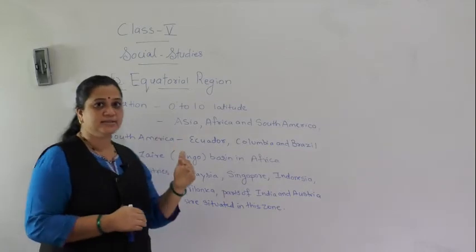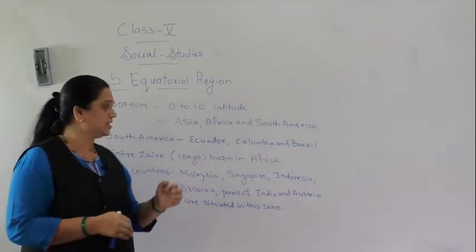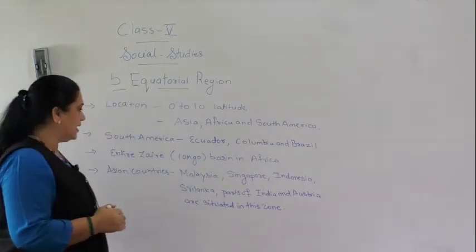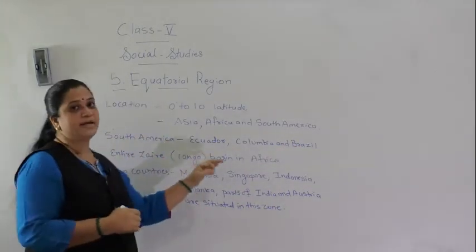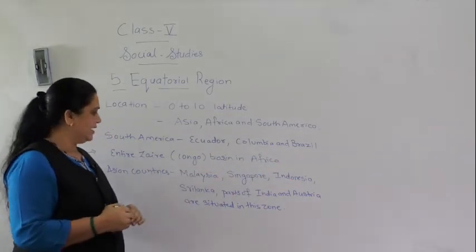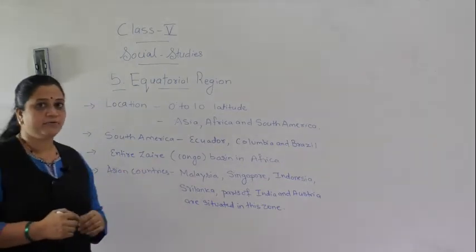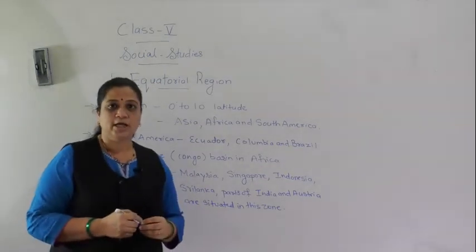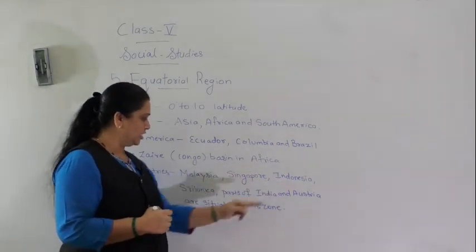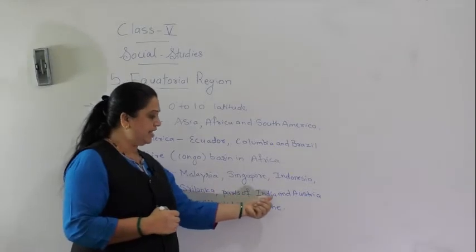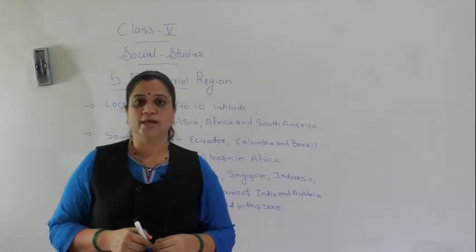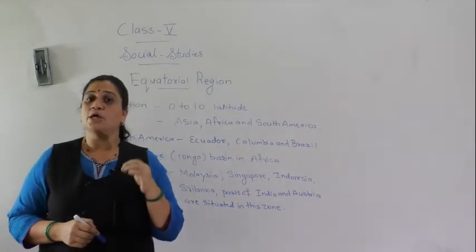In South America, the countries that fall in this region are Ecuador, Colombia, and Brazil. The entire Zaire Congo Basin in Africa also falls in this region. The Asian countries in the equatorial region are Malaysia, Singapore, Indonesia, Sri Lanka, and parts of India and Australia. So this is about the location of the equatorial forest region.